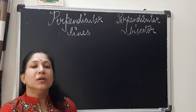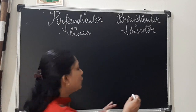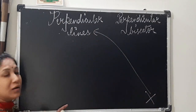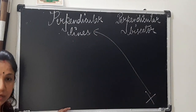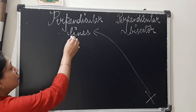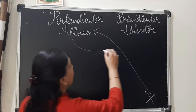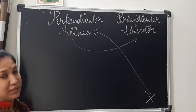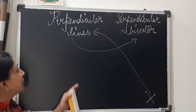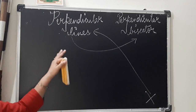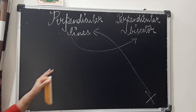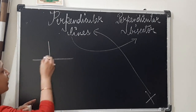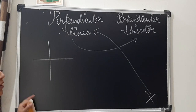Now, through our understanding of perpendicular lines, we will move to perpendicular bisector. For perpendicular lines, we understood that the lines will cross each other at right angle.